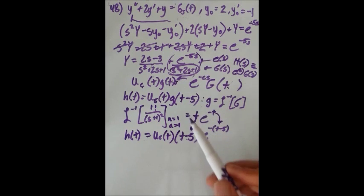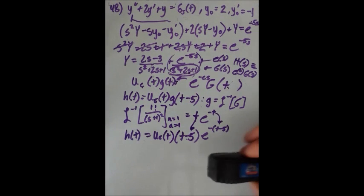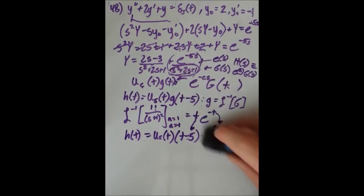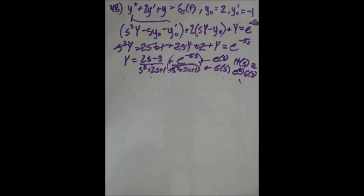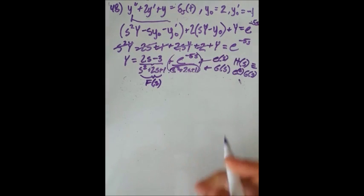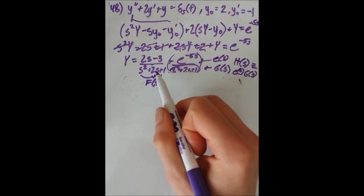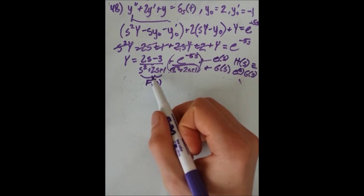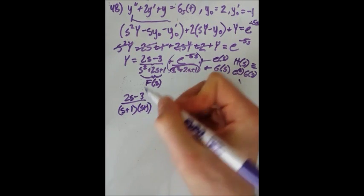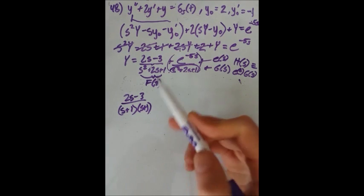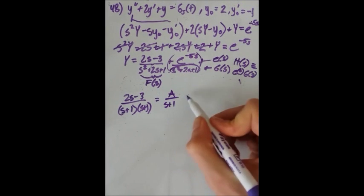That covers one half of our solution. Now let's handle the other half, which we'll call F(s) — the (2s minus 3) over (s squared plus 2s plus 1) piece. We use partial fractions on this by factoring the denominator as (s plus 1) squared. When you have a squared binomial in the denominator, you must write partial fractions with one constant per power: A over (s plus 1) plus B over (s plus 1) squared.